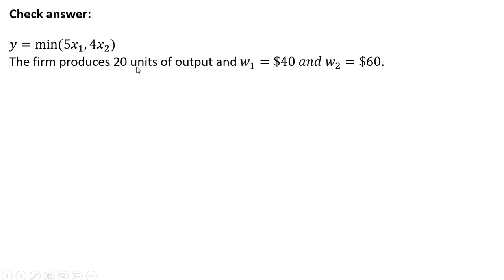We can check our answer. Let's say the firm produces 20 units of output, and the price of input 1 is $40, and the price of input 2 is $60 per unit. So plugging that information into our cost function, the total cost of producing 20 units of output here would be $460.